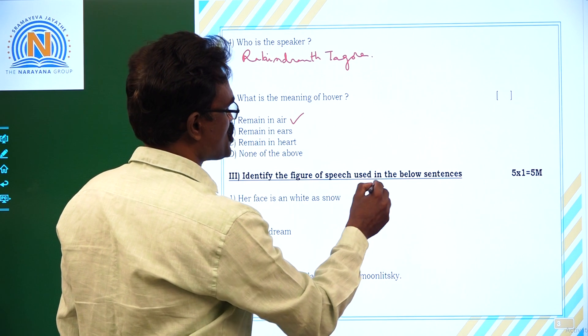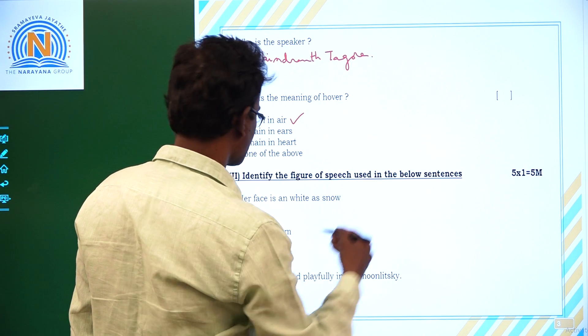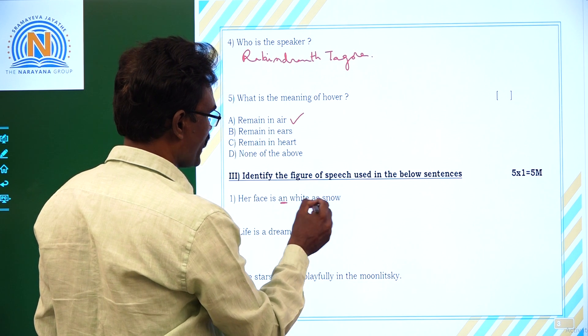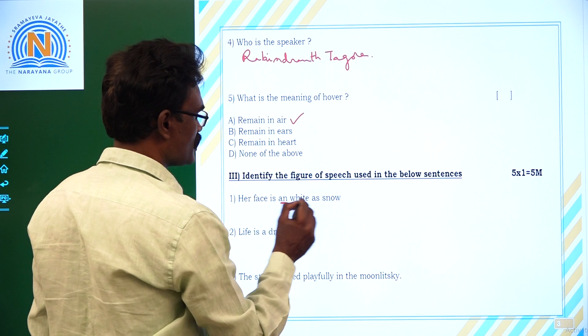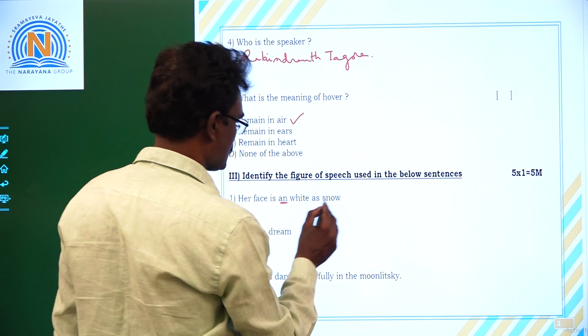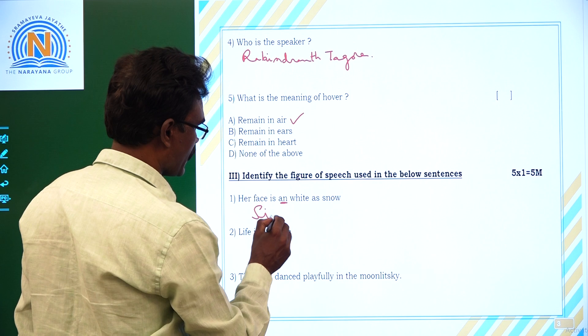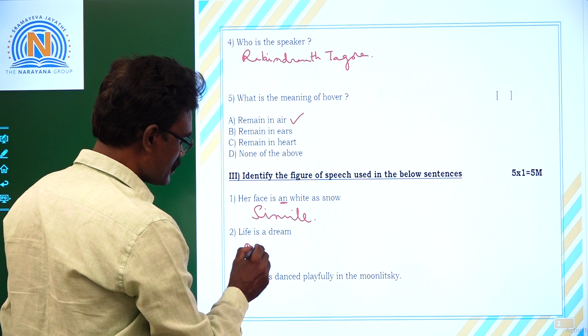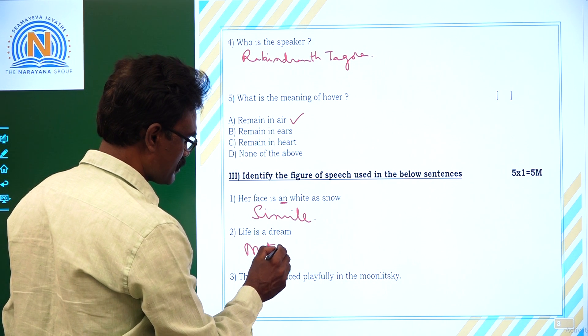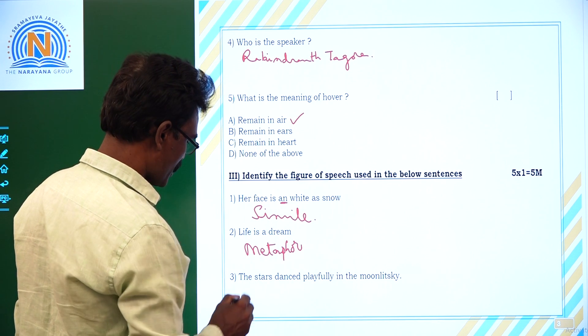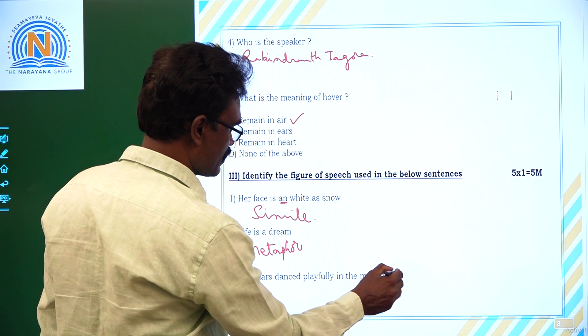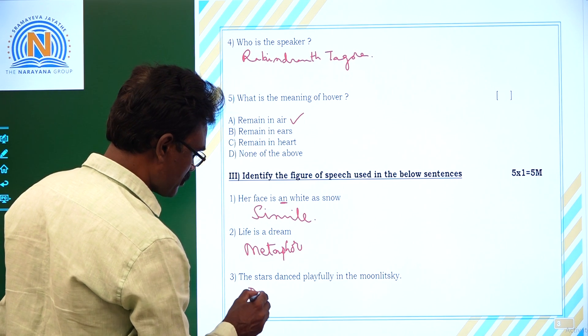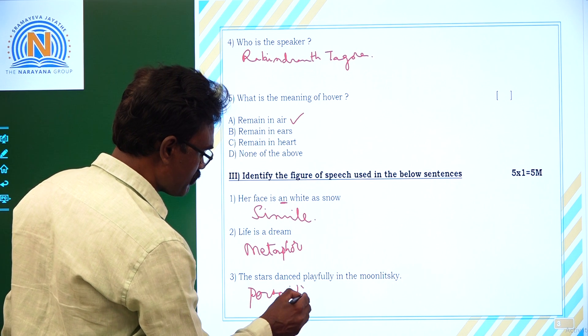Problem number three. Identify the figure of speech used in the following sentences. Her face is as white as snow. As white as snow, so this is simile. Next, life is a dream. This is direct comparison, metaphor. Third one, the stars dancing playfully in the moonlit sky. Stars are personified, so here personification.